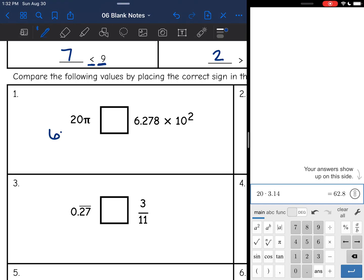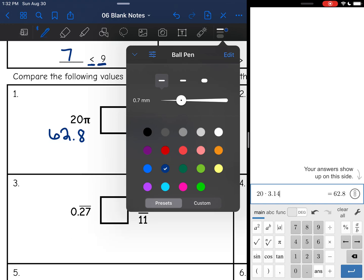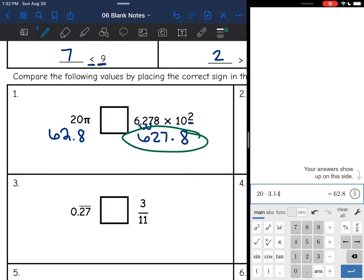So 20 pi is equivalent to 62.8. And then this number is in scientific notation right here. I have a positive 2 exponent. So I'm going to move the decimal to the right 2 and I get 627.8. So obviously this number is larger. So I am going to put the less than sign there because 62.8 is less than 627.8. That is how that statement would read.